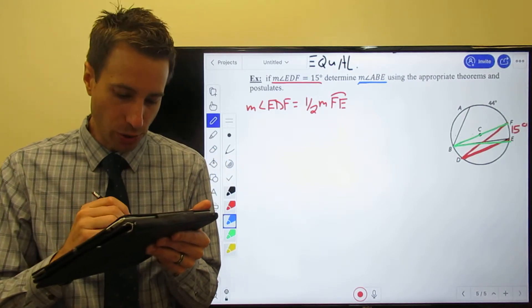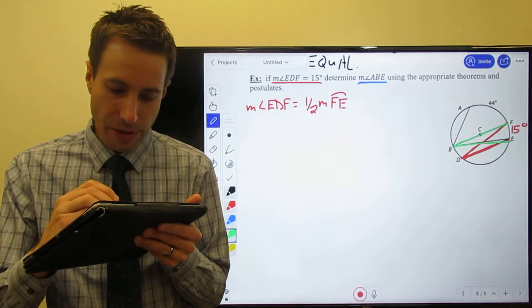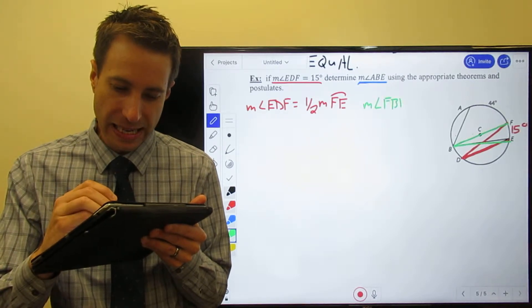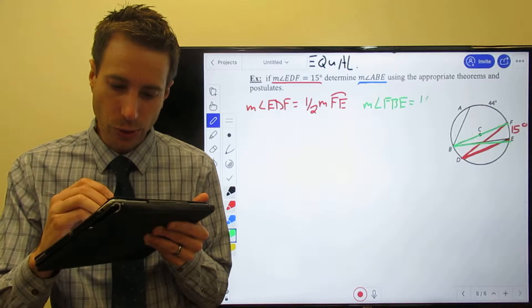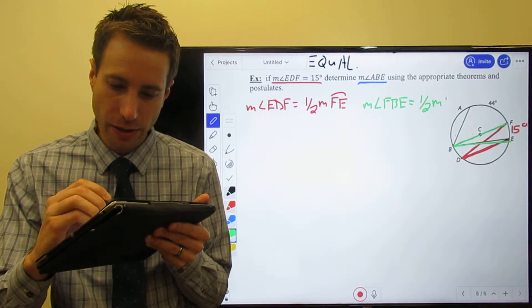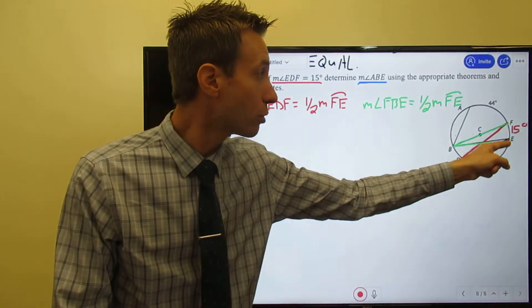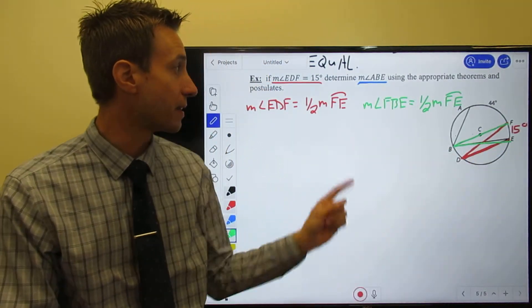But I also know, in green, the measure of angle FBE is equal to one half the measure of FE. This angle FBE also is half the measure of FE. Look, these are the same.